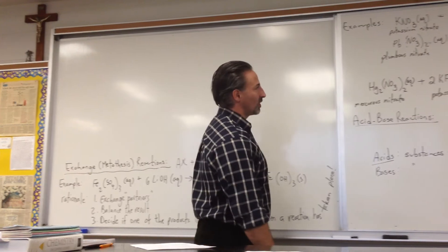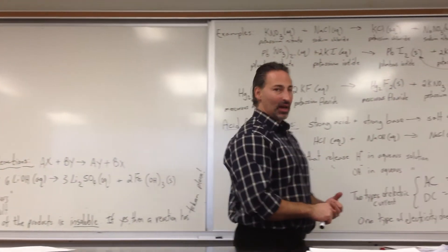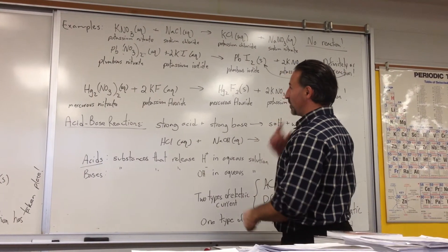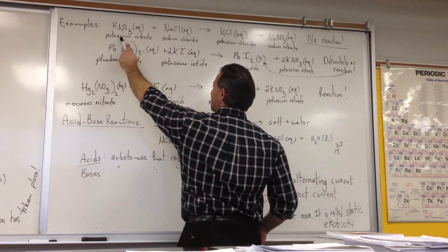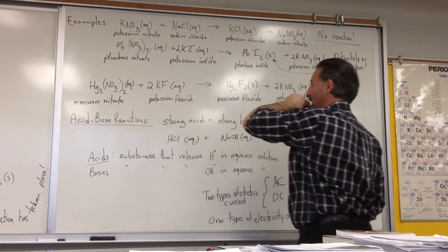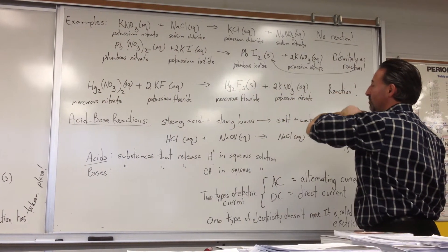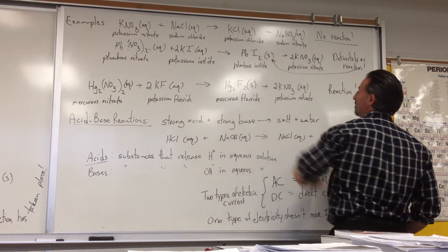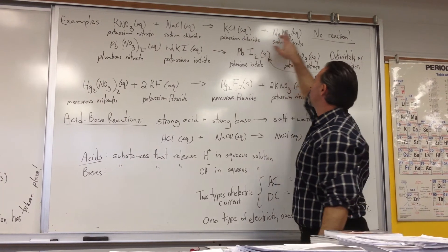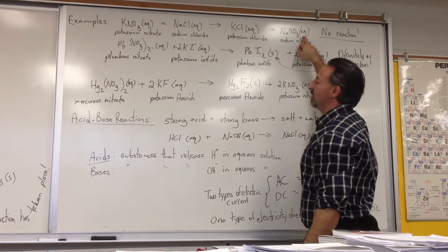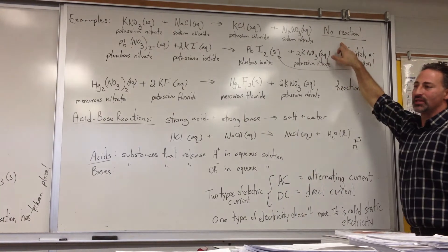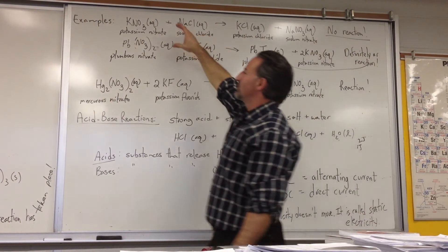Now I'll give you two other examples where one of them there is no reaction, and in the second there is a reaction. In the first example, we mix two soluble salts, potassium nitrate and sodium chloride. And the result would be a mixture of potassium chloride and sodium nitrate. But you'll notice that all of the substances listed are in aqueous form. So actually, no reaction has taken place.